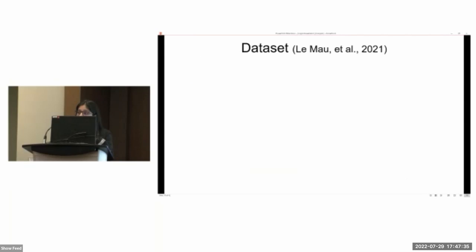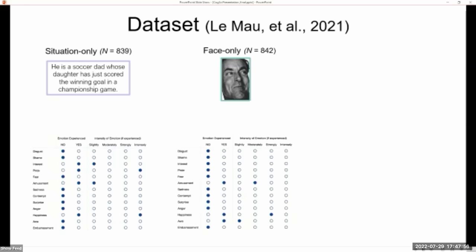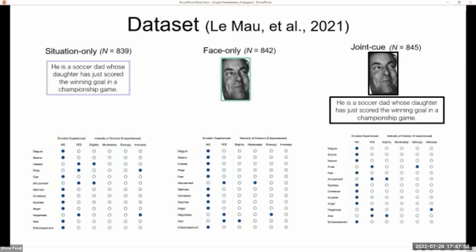The data set itself consists of ratings on 13 different emotion categories using first a dichotomous choice, followed by an intensity rating on a four-point Likert-type scale. And these ratings are given across three conditions. So ratings are present for descriptions of social situations, for actors' portrayals of those situations, as well as for the combination of these two cues.